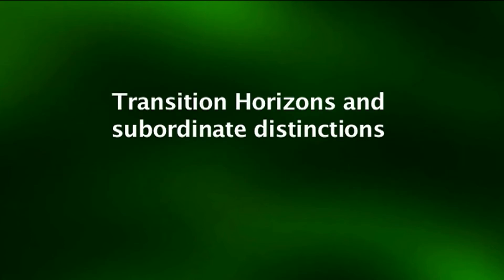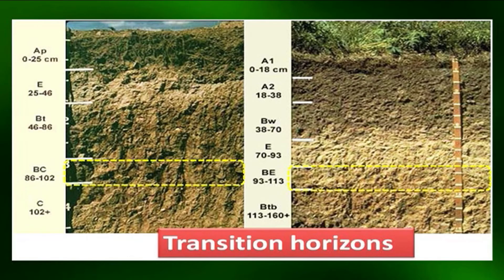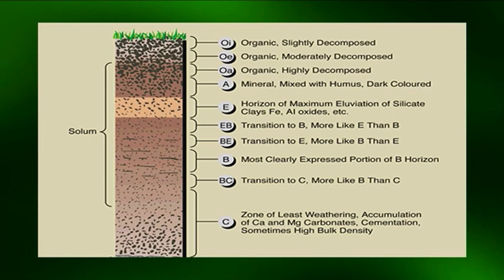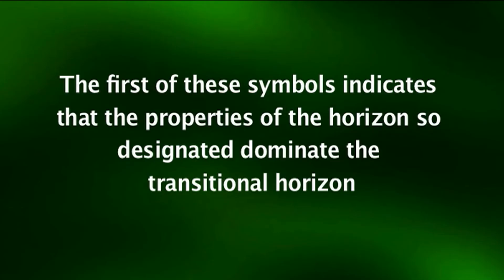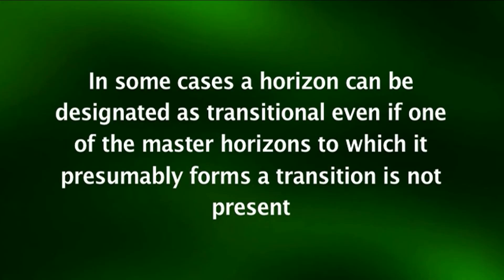Generally two kinds of transitional horizons are recognized. In the first kind, the horizon is dominated by properties of one master horizon but has subordinate properties of another. These are represented by two capital letters — for example, EB, BE, BC. The first letter indicates the properties that dominate. For example, an AB horizon has characteristics of both an overlying A horizon and an underlying B horizon, but is more like the A horizon. In some cases a horizon can be designated as transitional even if one of the master horizons to which it forms a transition is not present.